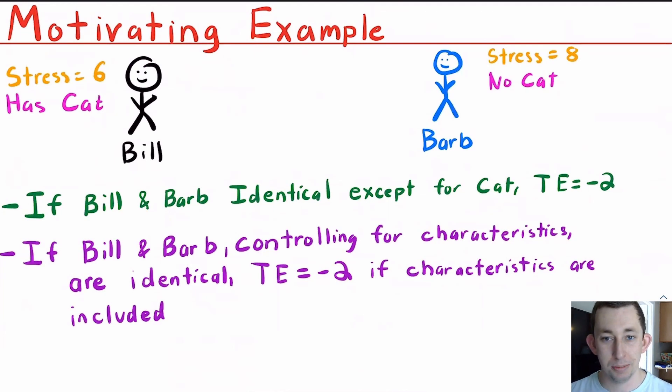Why do we say that the treatment effect here is minus 2? Well, if Bill and Barb are identical except for the fact that Bill has a cat and Barb does not, then Barb's stress level of 8 is a really good proxy for Bill's Y0, or Bill's outcome if he does not have a cat, and Bill's stress level of 6 is a good proxy for Barb's Y1, her outcome if she did have a cat. And we know to find a treatment effect, we take your Y1 and we subtract your Y0 for each person.